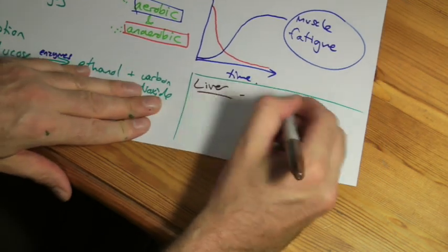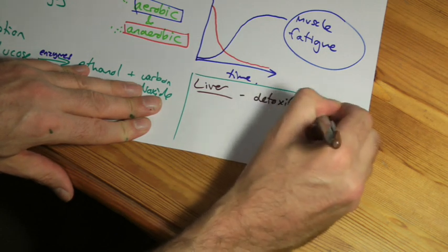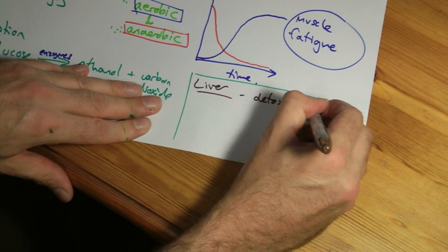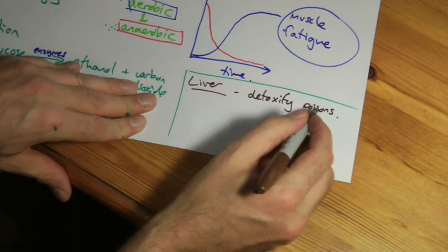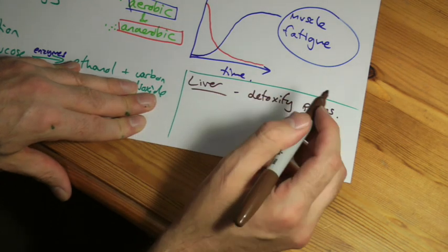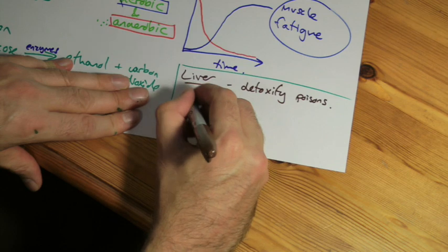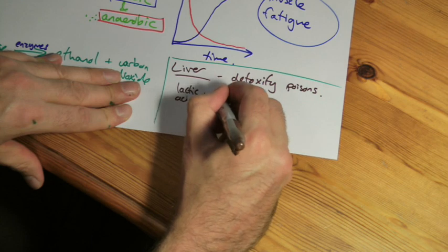And the kind of things the liver does, it detoxifies anything in your body that shouldn't be there. So poisonous substances, alcohol being an example, it breaks alcohol down into something that is non-toxic. Of course, it also breaks down lactic acid, and this is where we come back to that thing of the oxygen debt we talked about.